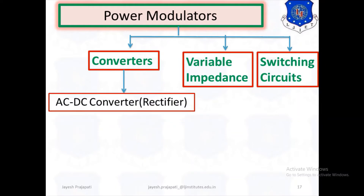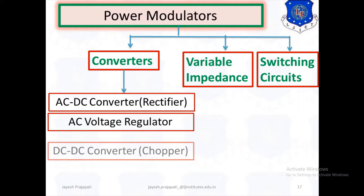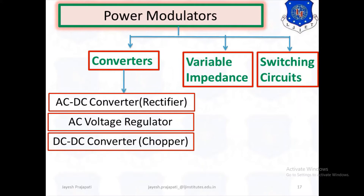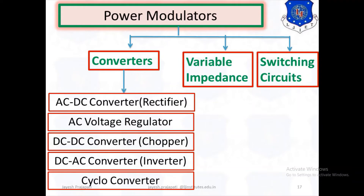A converter may be classified as: AC to DC converter (also called a rectifier), AC voltage regulator (AC to AC converter), DC to DC converter (also called a chopper), DC to AC converter (also called an inverter), and cycloconverter. These are the converters used in power modulators.